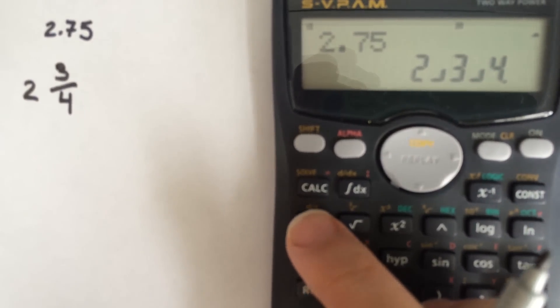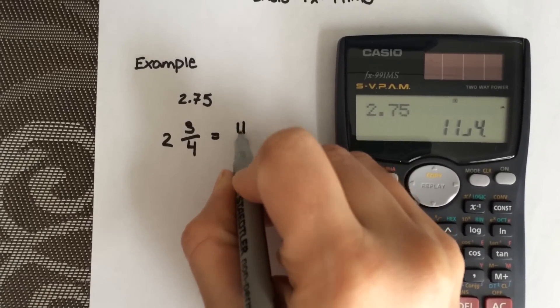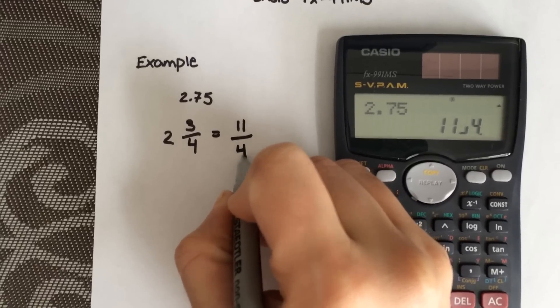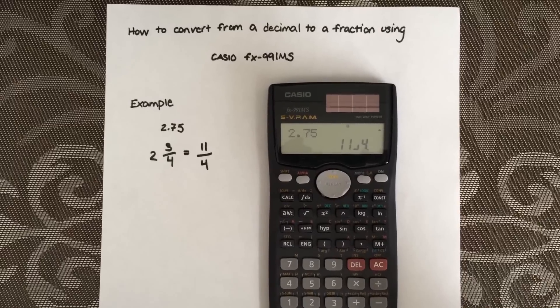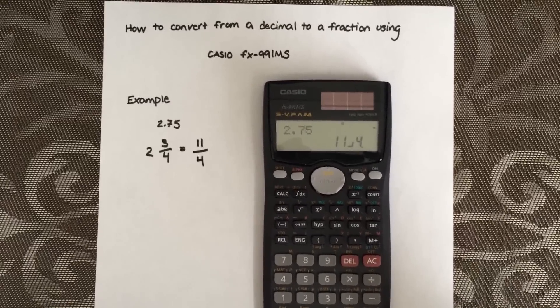As you can see, there you have it. It's 11 over 4 as an improper fraction. And that's how you convert from a decimal to a fraction using Casio FX991MS.